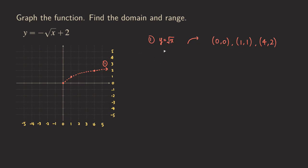First we need to think about which transformation to do first — the negative sign, which is a vertical reflection, or the plus 2, which is a vertical shift of two units. You may wonder which to do first, or whether it matters. We follow the order of operations: after we get the value for the square root of x, we multiply by negative one before adding two. So we do the vertical reflection first.